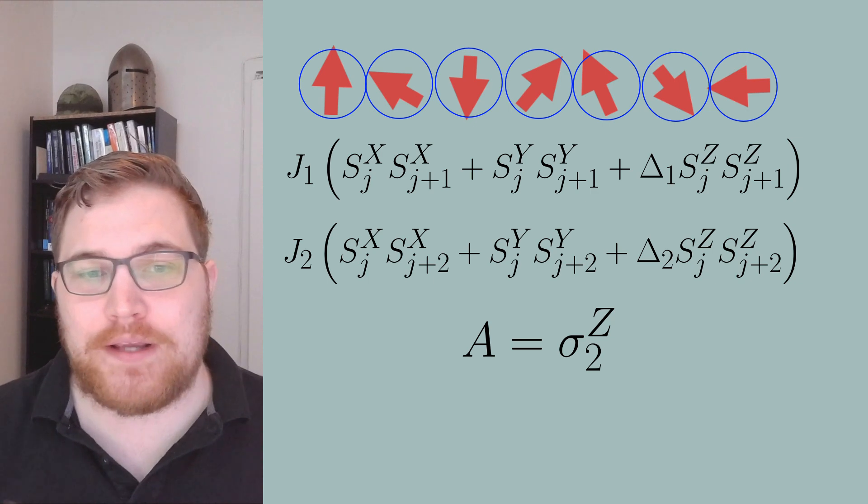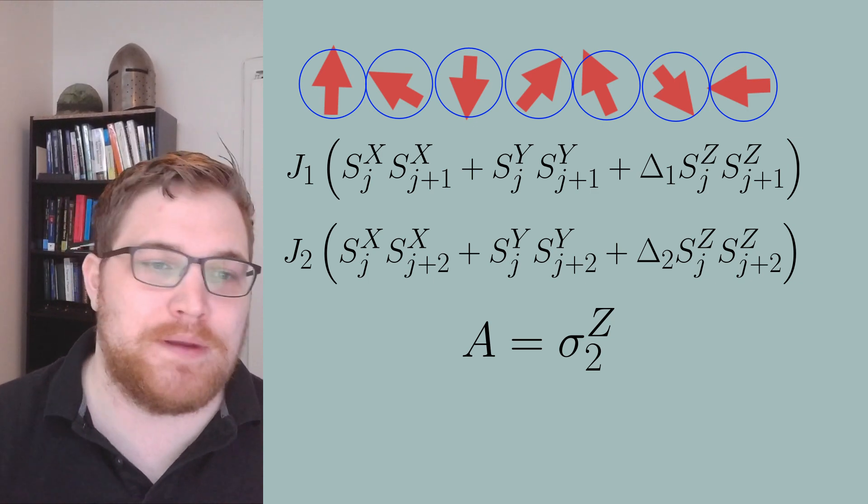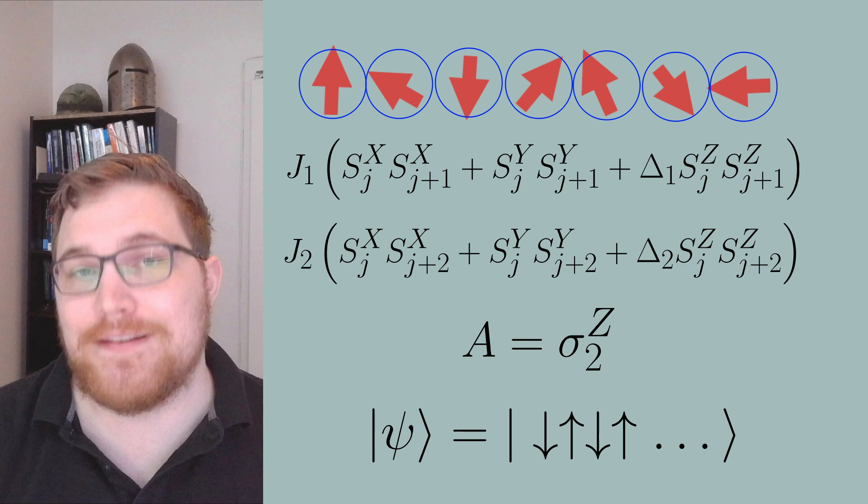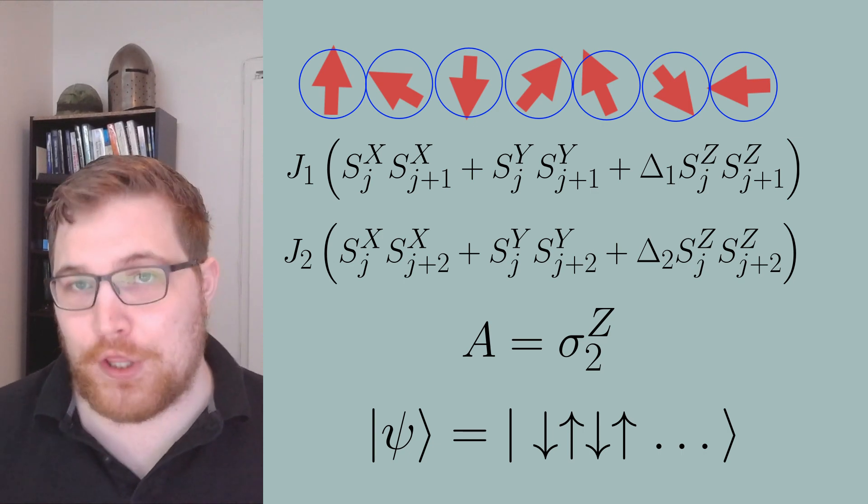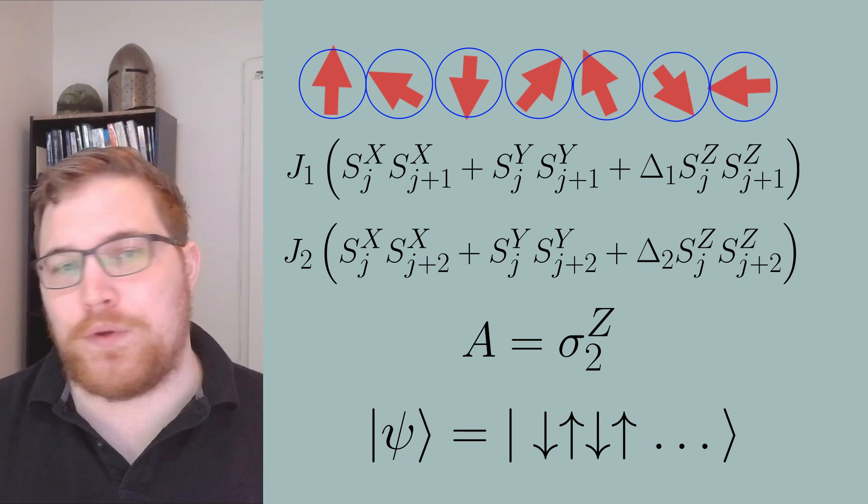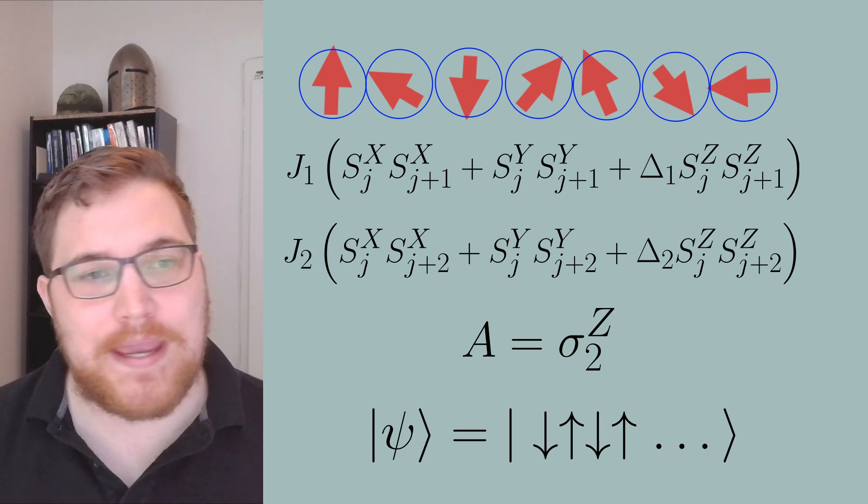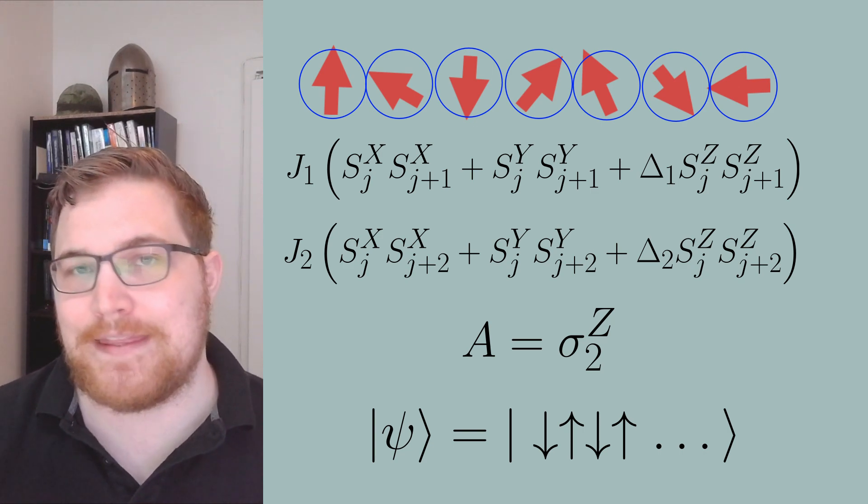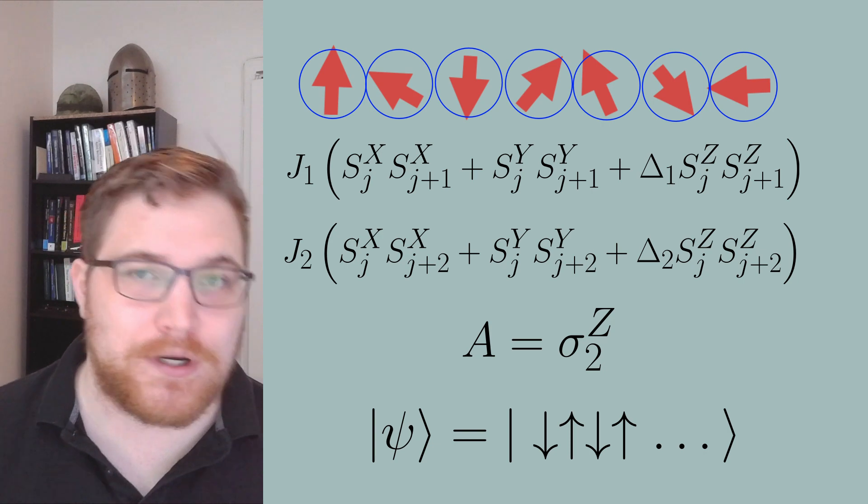We will initialize our system in such a way that our spins start anti-aligned with their neighbors in the z direction. So we'll have the following state. In this first animation, we will watch the expectation value of A in time and also track the distance to equilibrium as time goes on.